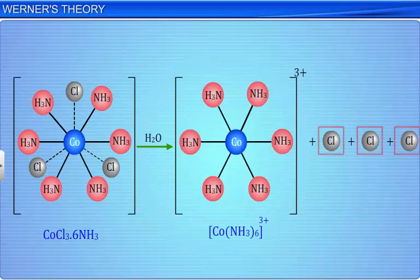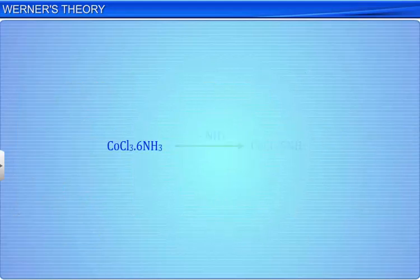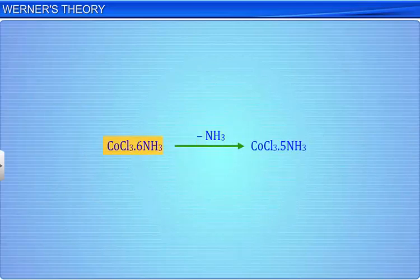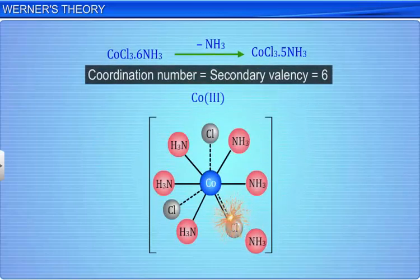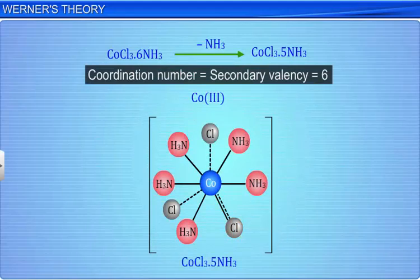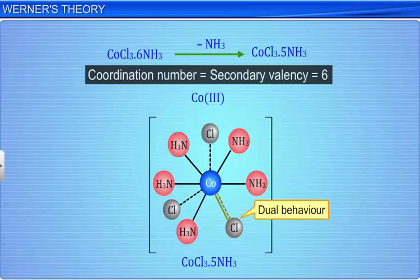Werner deduced that the loss of 1 ammonia molecule from CoCl3.6NH3 should give CoCl3.5NH3. This complex has only 5 ammonia molecules. Therefore, to satisfy the coordination number of 6 of cobalt, 1 chloride ion assumes dual behavior, i.e., it satisfies the primary as well as the secondary valency of cobalt.